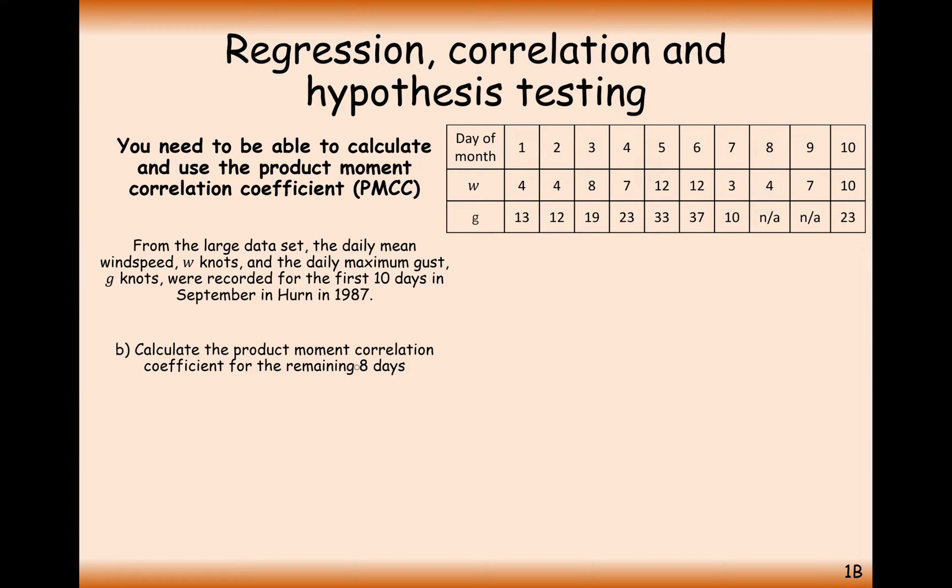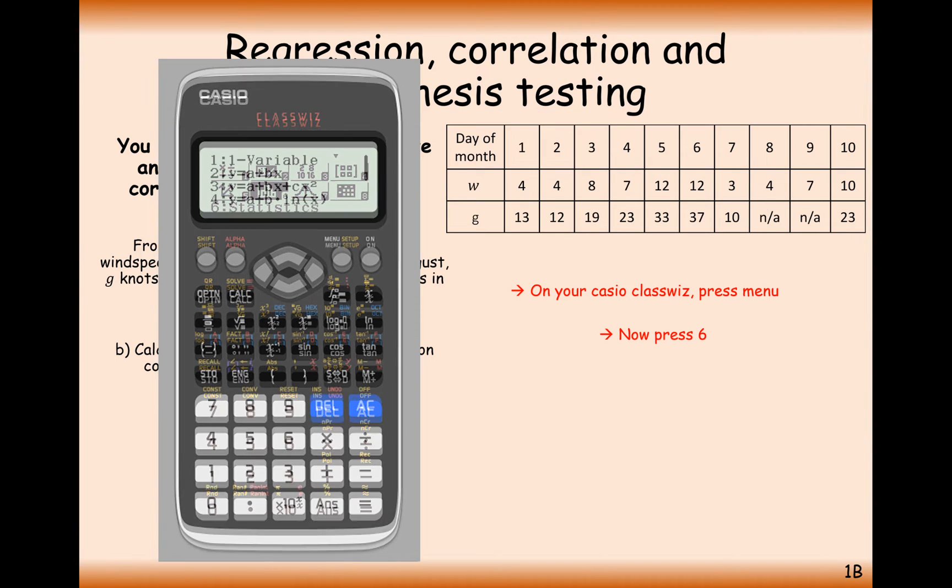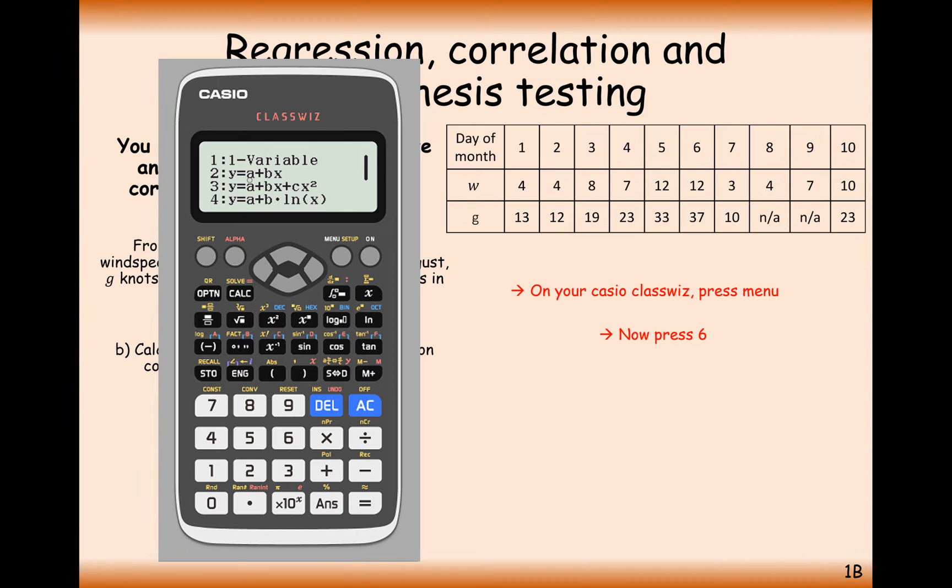Part B, calculate the product moment correlation coefficient for the remaining 8 days. Now all of the work here is actually done on your calculator, which is lovely. So grab your calculator, hit menu, option number 6 first of all, then we want option number 2. You can see option number 2 here is Y equals A plus BX. That's going to give us a straight line of best fit. A here is effectively the C from Y equals MX plus C, and the B here is effectively the gradient. For the benefit of A-level maths, we're just going to be going with a straight line of best fit, so option number 2.